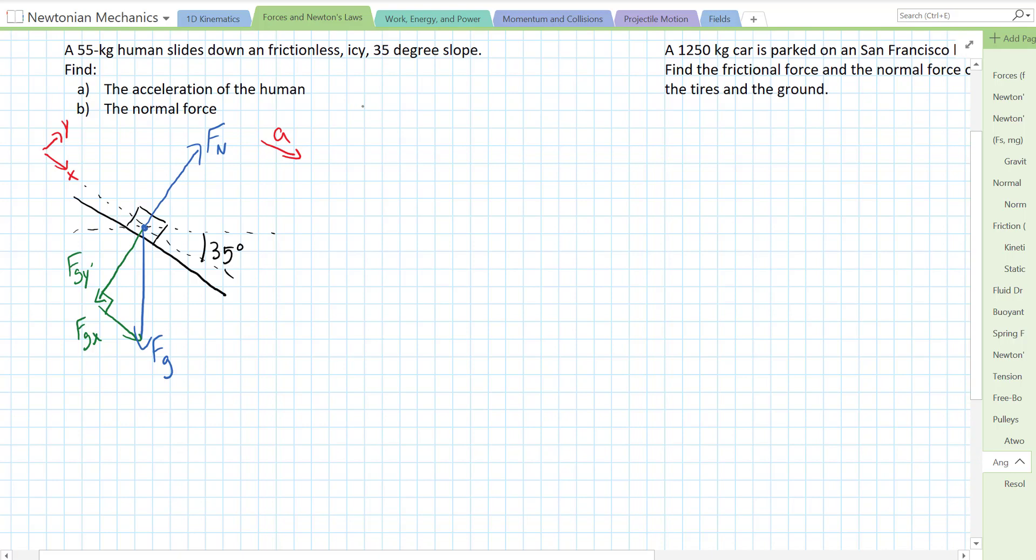So let's solve for the force of gravity first of all. Force of gravity equals mg, so that's 55 kilograms times 9.81 meters per second squared. 55 times 9.81 equals 539.55, or to correct sig figs, force of gravity is 540 newtons.